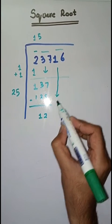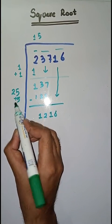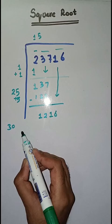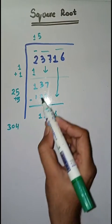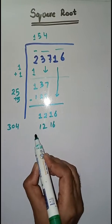Next pair is 16. We take 16. 25 plus 5 is equal to 30. So we take a number 4. 304 times 4 is 1216. So this is completely solved.